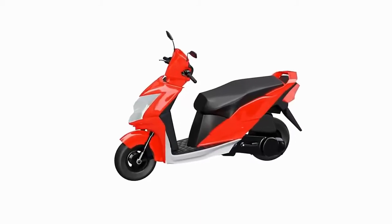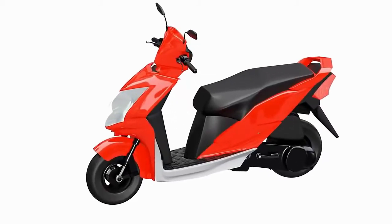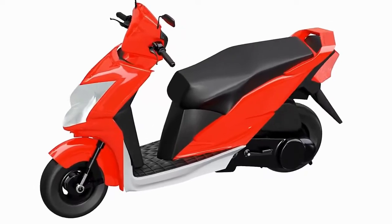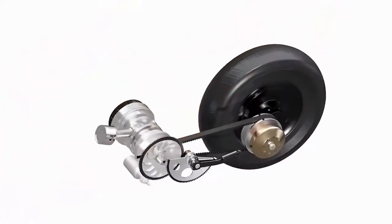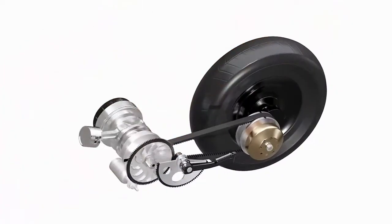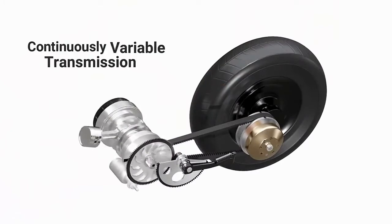Gearless scooters are among the most common two-wheelers popular in many parts of the world. They are typically equipped with an automatic transmission system. This transmission system is known as Continuously Variable Transmission, or CVT.